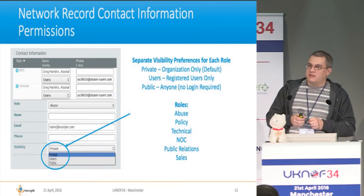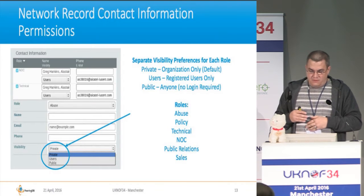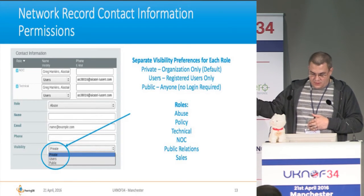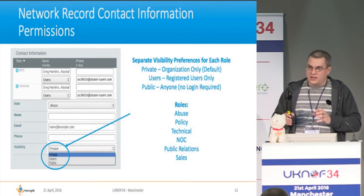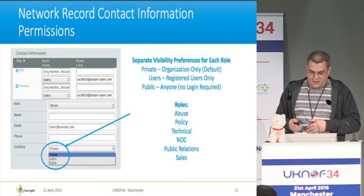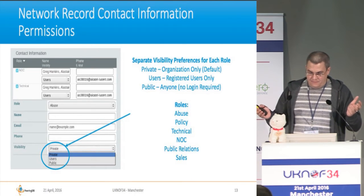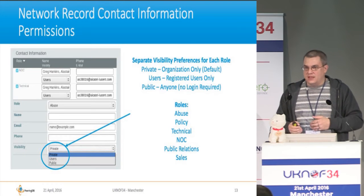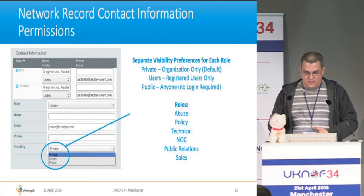Here's an example about contact information. As mentioned, we had problems with people spamming, so we have three different visibility preferences for each role. Private means anyone in the organization can see it. Users means registered users can see the contact information — this is the default. Public means anyone can see it. So you might have a sales contact that's public, a technical contact for registered users, and some other contact only visible within the organization.